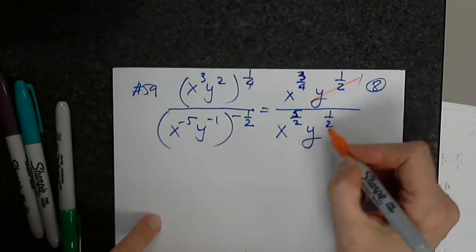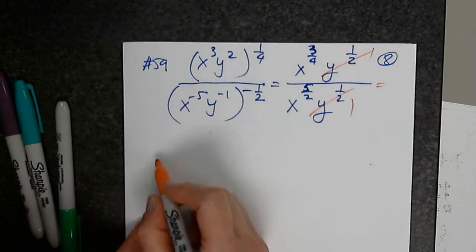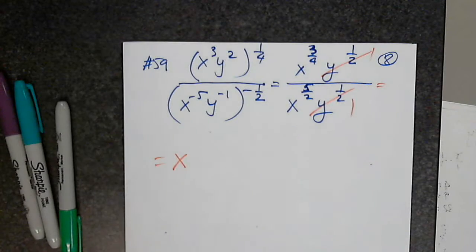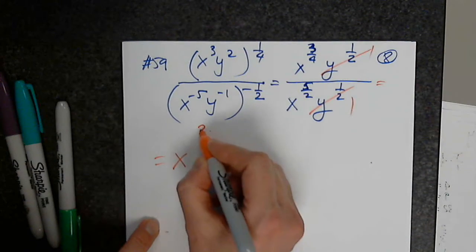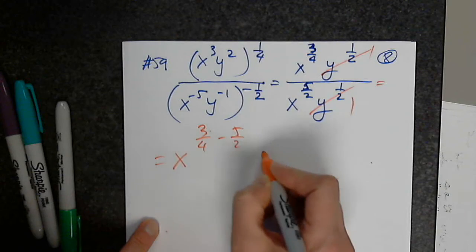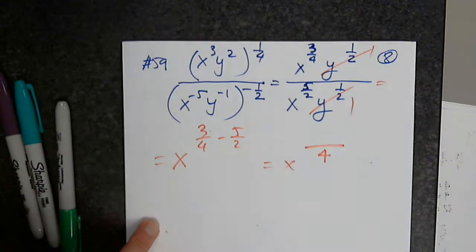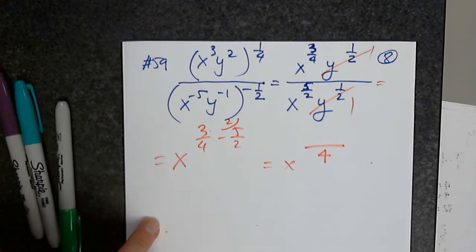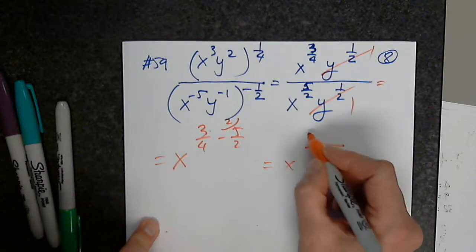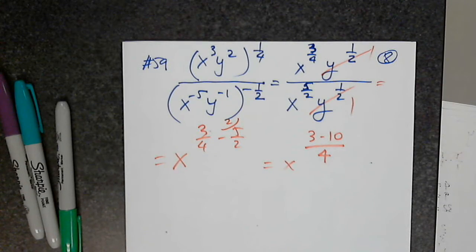Of course these two are the same, so they're gone. And now I copy the base — what happens with the exponents? From 3 fourths, I subtract 5 halves. Find the least common denominator, and this one needs a 2. So we have 3 minus 10 — do you agree with 3 minus 10? — over 4.